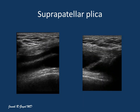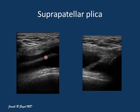The suprapatellar plica is an embryonic remnant which completely or incompletely divides the suprapatellar pouch. Here is the hypoechoic suprapatellar plica on the short axis scan and here it is on the long axis scan.